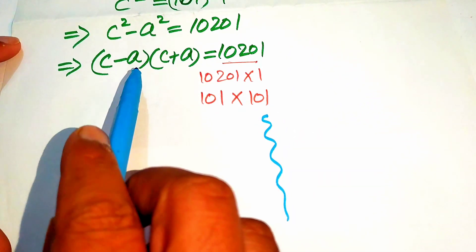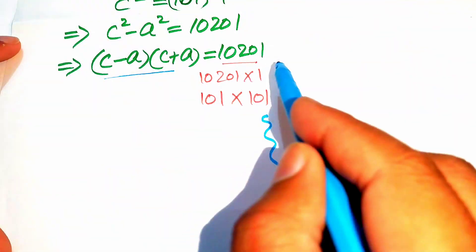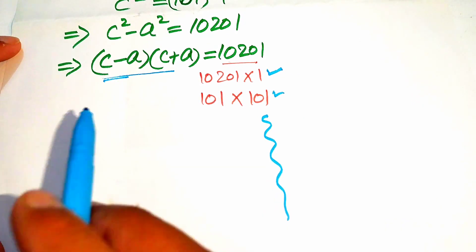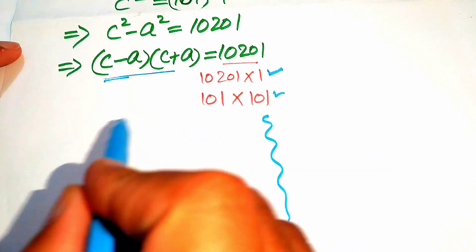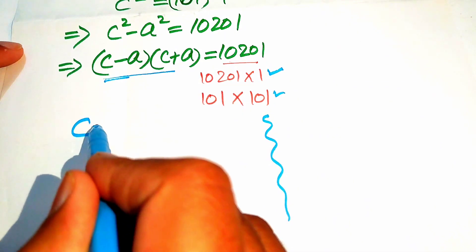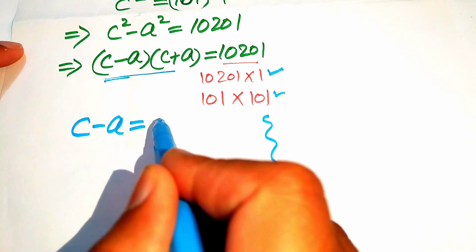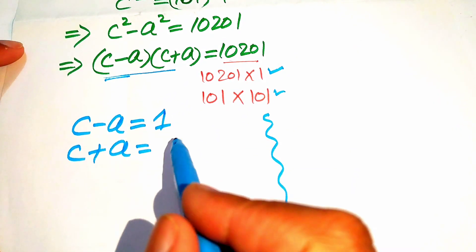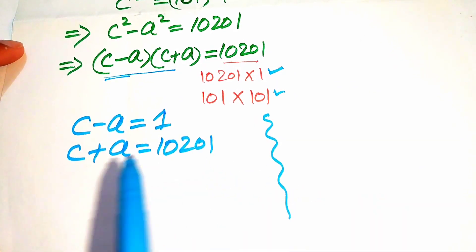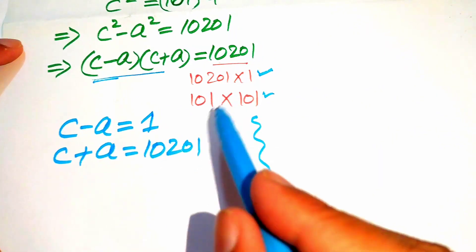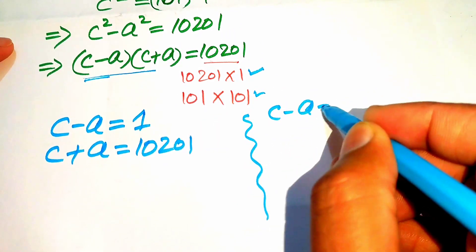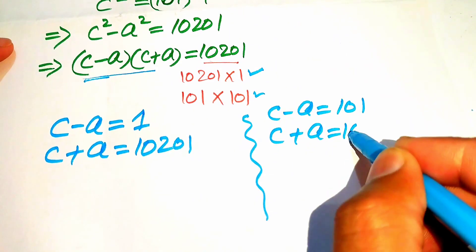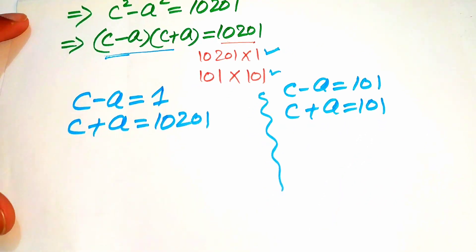We convert this into two cases. In the first case we compare the left-hand side with the first factoring, giving c minus a equals 1 and c plus a equals 10201. In the second case we compare with the second factoring, giving c minus a equals 101 and c plus a equals 101.